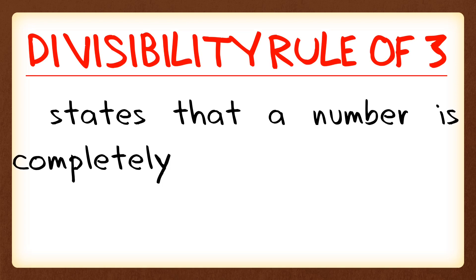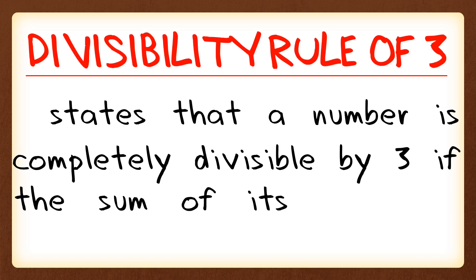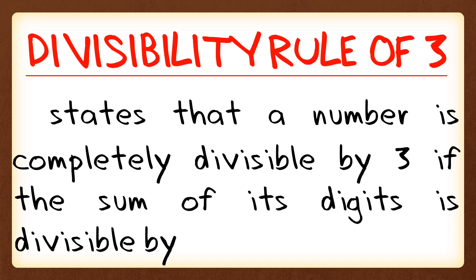The divisibility rule of 3 states that a number is completely divisible by 3 if the sum of its digits is divisible by 3. So in this rule, we're going to get the sum of all the digits.